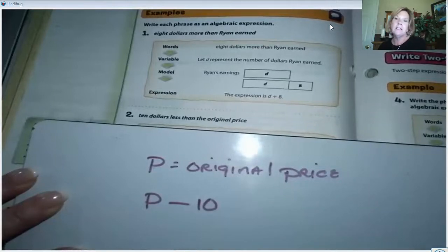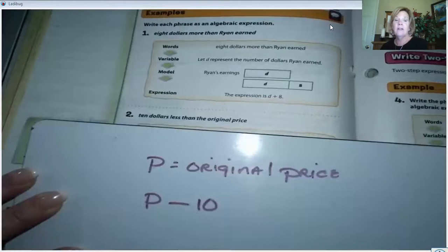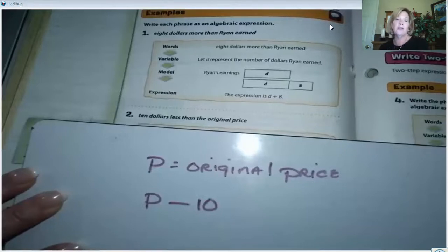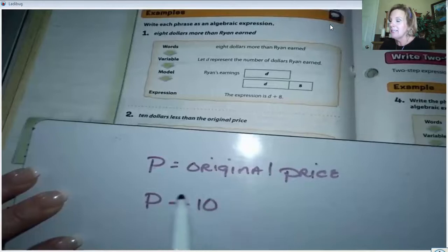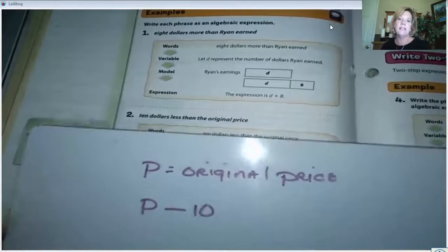Avoid using the multiplication symbol that looks like an X, because we use X as a variable. Also avoid using O as a variable because it looks like the number zero. It really doesn't matter what order you add, but it completely matters what order you subtract. Think of it this way: if I have $20 and you have $10 less than I have, you have only $10. We take my $20 and subtract the $10 to get how much you have. So for 'less than,' we start with the original price and subtract $10: P - 10.